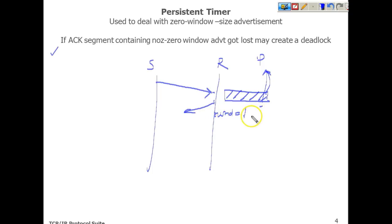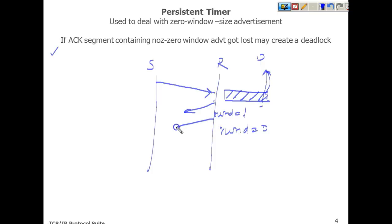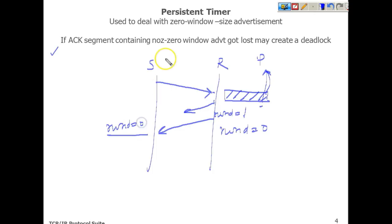If the receiver advertises RWND equals one, meaning it can accept one byte, this is a case of silly window syndrome — we are not effectively utilizing the bandwidth and are increasing traffic in the network. To overcome this, Clark has suggested that whenever this scenario occurs, the receiver should announce RWND equals zero, meaning it has no buffer space available and the sender should hold and not send more data until it announces otherwise.